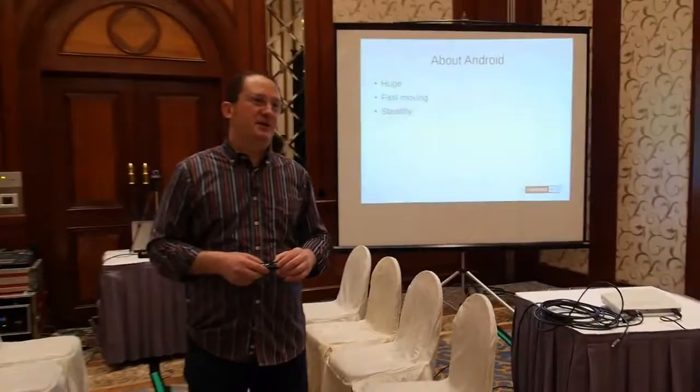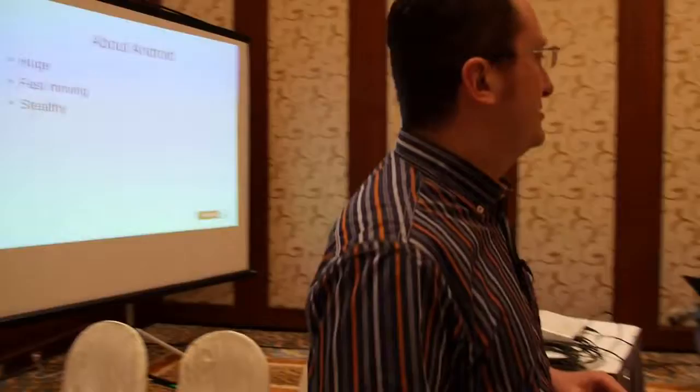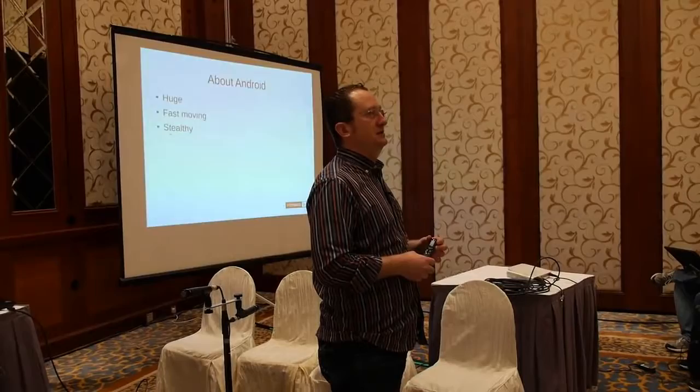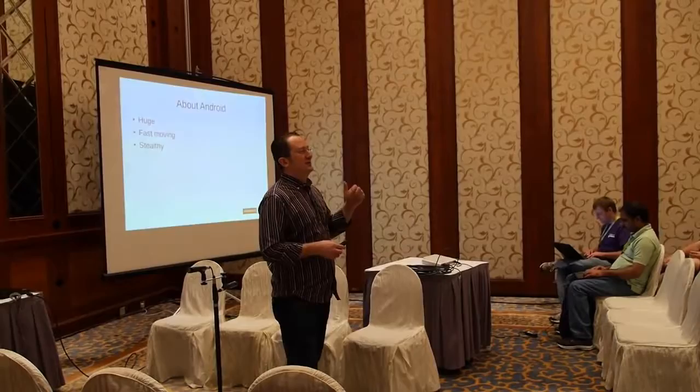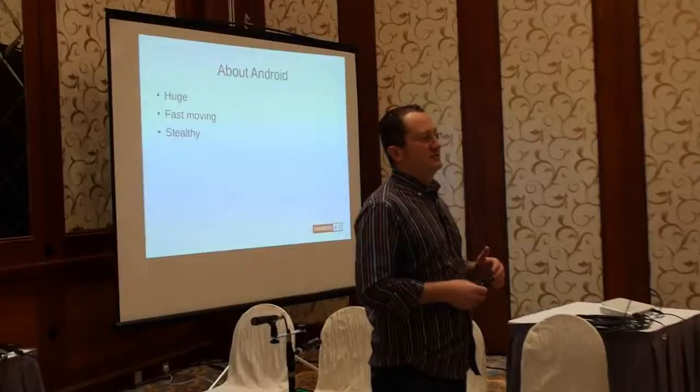The first thing I want to start with is a prelude about Android in general. Android is very big. Gingerbread, which is about two years old now, was three gigabytes when you downloaded it and generated about 10 gigabytes of a build directory. These days, Jelly Bean is about 10 gigabytes and will generate about 25 gigabytes. A W520 quad-core i7 with 8 gigs of RAM would take 20 minutes to build Gingerbread and about 80 minutes to build 4.2.